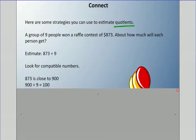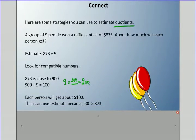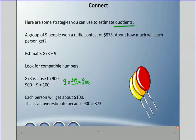We've got to think this way in reverse terms: nine times something equals 900. From our work with multiples of ten, we learned that nine times one is nine, add the two zeros, and there we go. So the answer is about a hundred dollars. Now this is an overestimate because 900 is greater than 873, so they'll get a little bit less than $100 in reality.